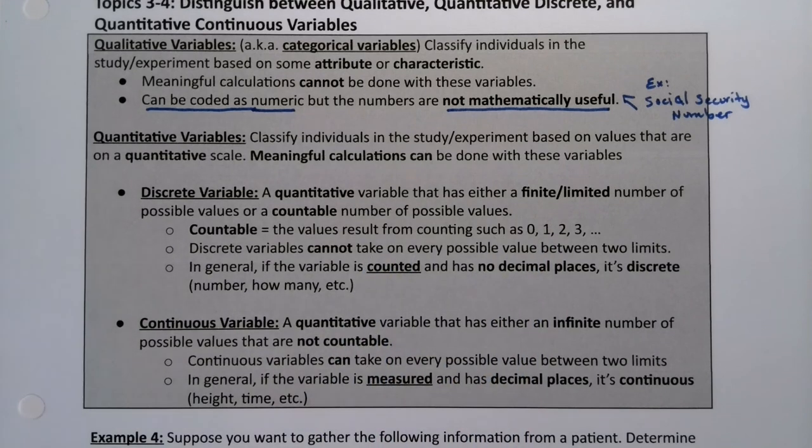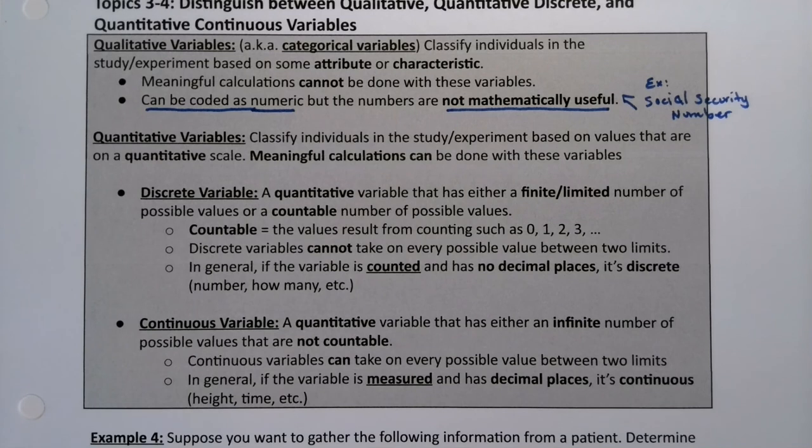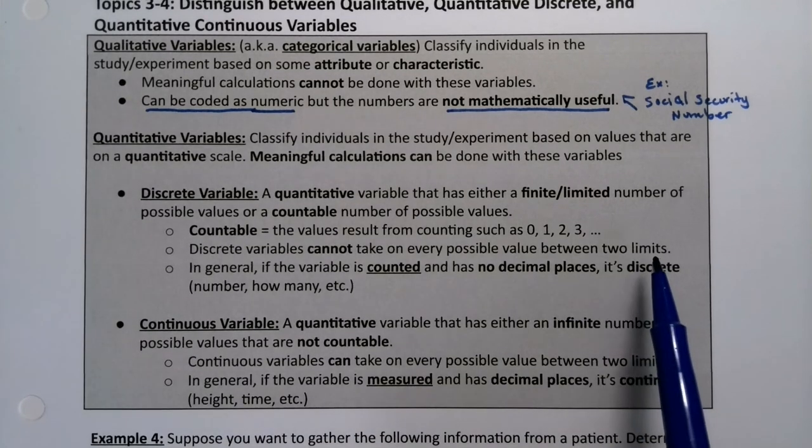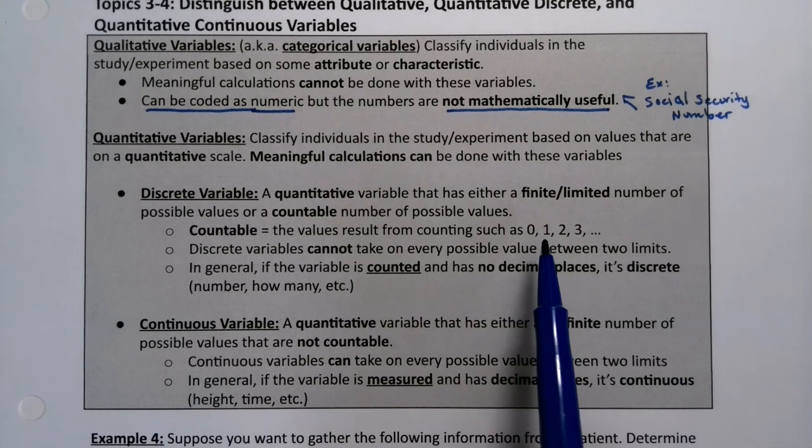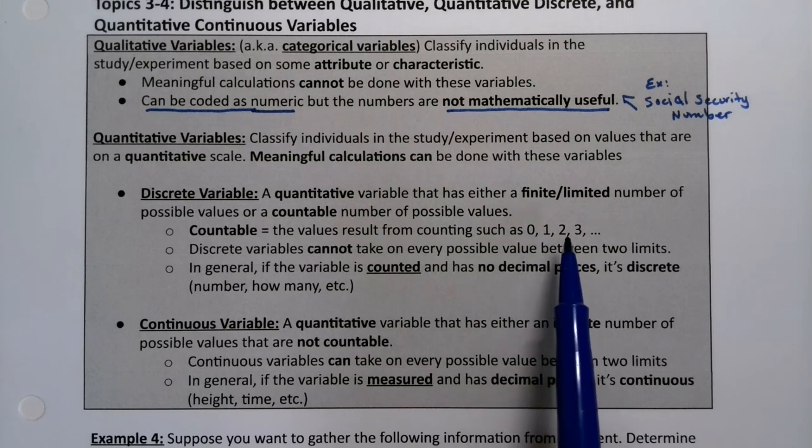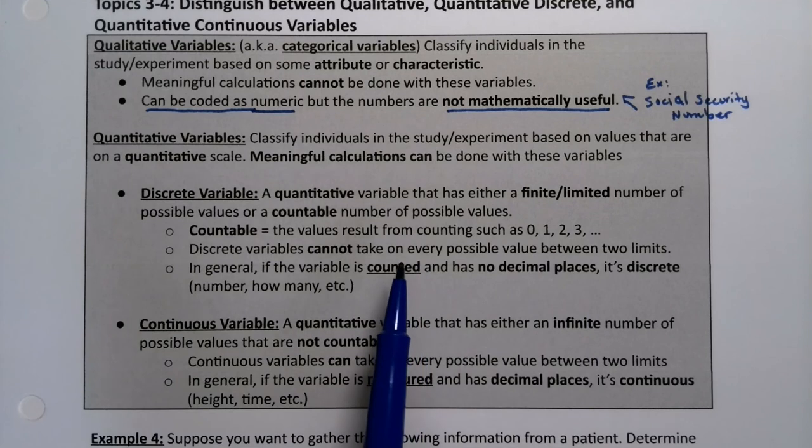Discrete variables cannot take on every possible value between two numbers. So between two limits. So it can't be 1, 2, 3, 4, 5, 2.8, 3.2, 1. That's not possible. It's either 1 or it's 2, but that's it. So that would be discrete.